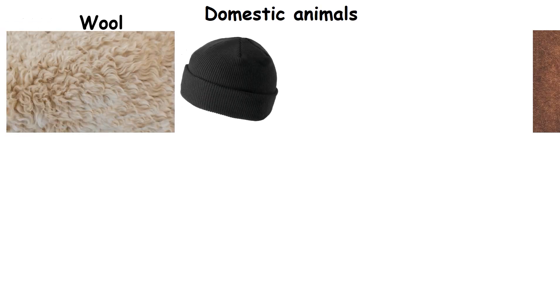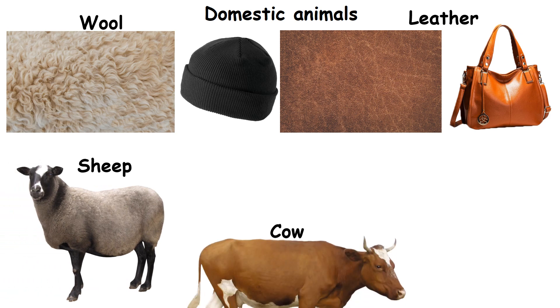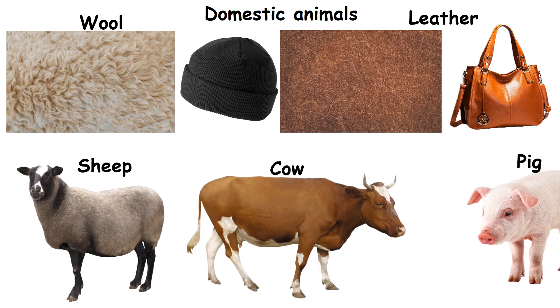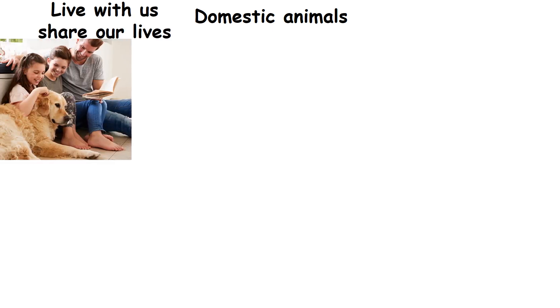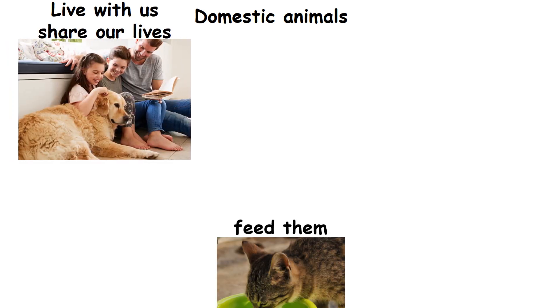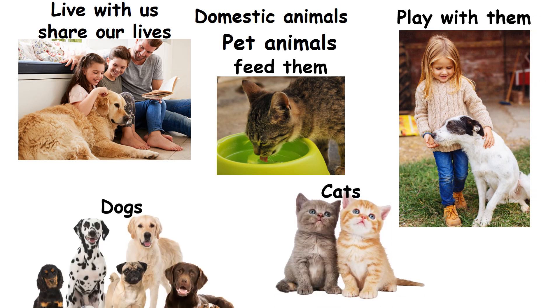Some domestic animals give us wool and leather. Examples: sheep, cow and pig. Some domestic animals live with us and share our lives. We feed them and play with them. They are called pet animals. Examples: cat and dog.